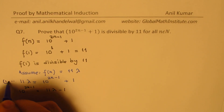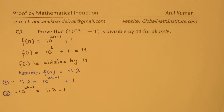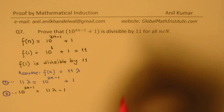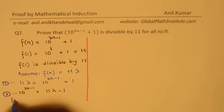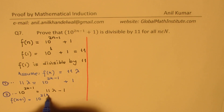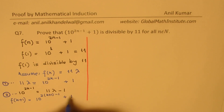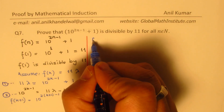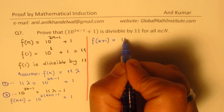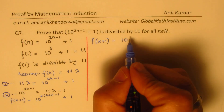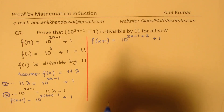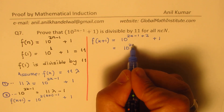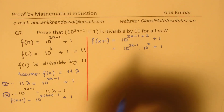We can use equation number 1 or the rearranged form to prove that f(k+1) is also divisible by 11. So now the idea is to find what f(k+1) is. f(k+1) will be 10 to the power of 2 times (k+1) minus 1 plus 1. Taking it to the right side and simplifying, f(k+1) equals 10 to the power of 2k plus 2, which we write as 2k minus 1 plus 2.